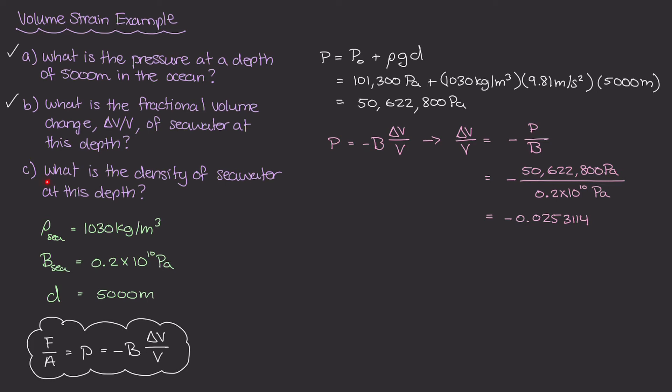And finally, part C asks us, what is the density of seawater at this depth? If we have our density of seawater to be 1030 kilograms per meter cubed, if you take some volume of seawater and you bring it down all the way to a depth of 5000 meters, that volume is going to get compressed by a tiny amount, which is delta V. Now what this delta V over V term tells us is that the original volume, which is V, will decrease by a factor of this 0.025 at a depth of 5000 meters.